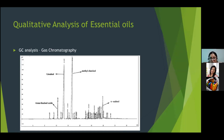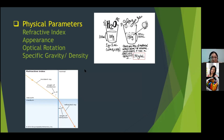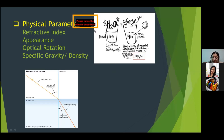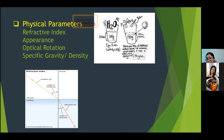You can send an email for a detailed description of the analysis. There are also physical parameters to identify the quality of your essential oil: refractive index, appearance, optical rotations, and specific gravity. The density of an essential oil is very peculiar — every essential oil has its own fixed density. For example, 100 grams in 100 ml for water, but some oils may give 140 grams in 100 ml.